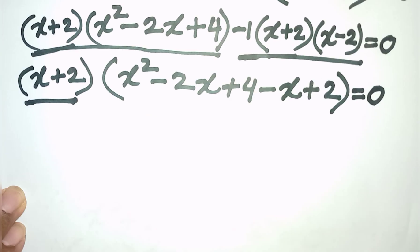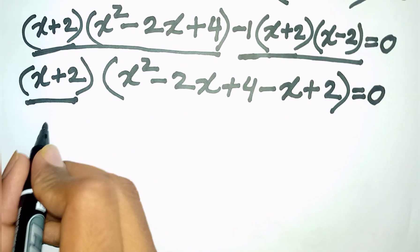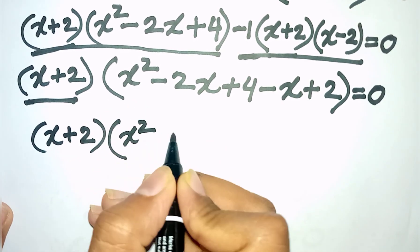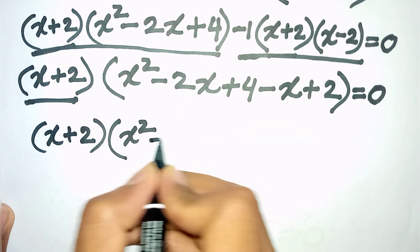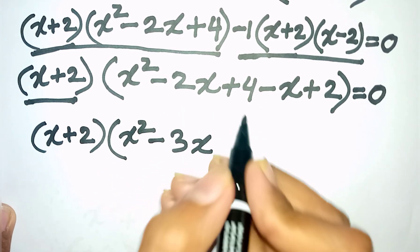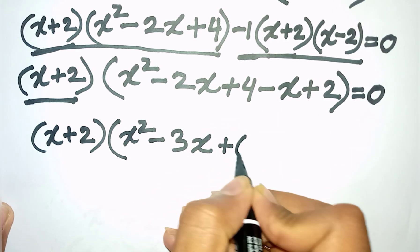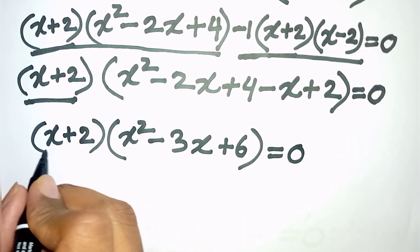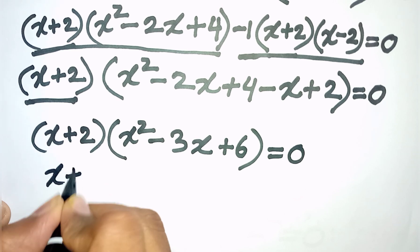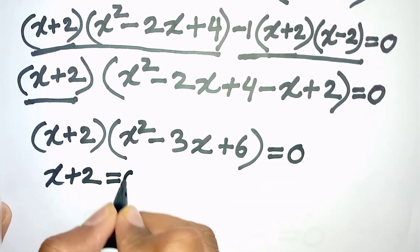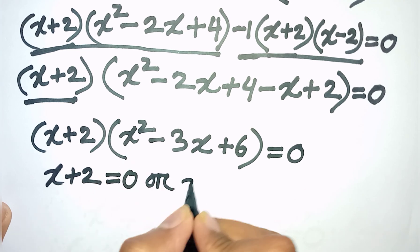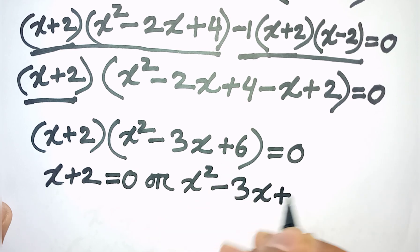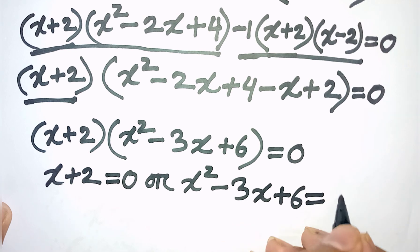Now we can write here: (x + 2)(x² - 2x - x + 4 + 2) = 0, which simplifies to (x + 2)(x² - 3x + 6) = 0.